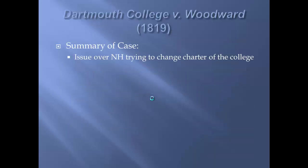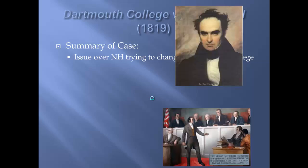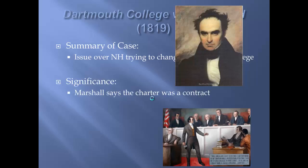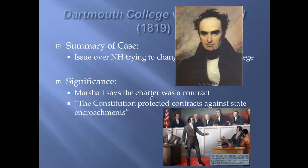Next, we have Dartmouth College versus Woodward. New Hampshire was trying to change the charter of the college. Daniel Webster, part of the great triumvirate and a very famous member of the House and Senate, argued this case before the Supreme Court because he was a Dartmouth graduate. John Marshall and the Supreme Court said the charter was a contract, and the Constitution protected contracts against state encroachment. Contracts must be honored.